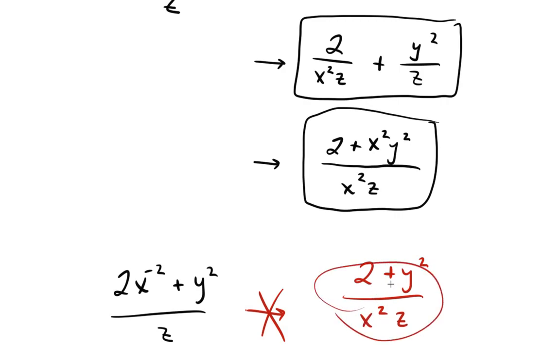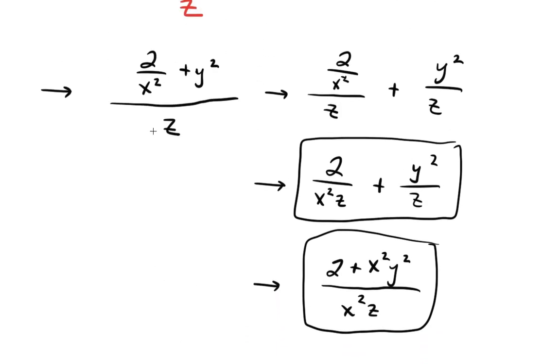So this is not what you want to do. What you want to do is follow these steps that we described here. First, you make its own fraction, and then you simplify the resulting expression until you get something that has no negative exponents and no complex fractions.